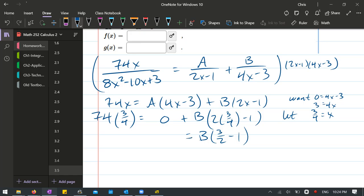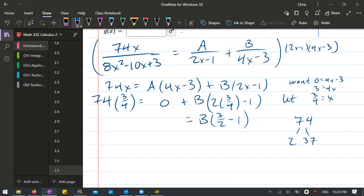74/4... that's 2 times 37 over 2 times 2. 2's cancel. 37 over 2.